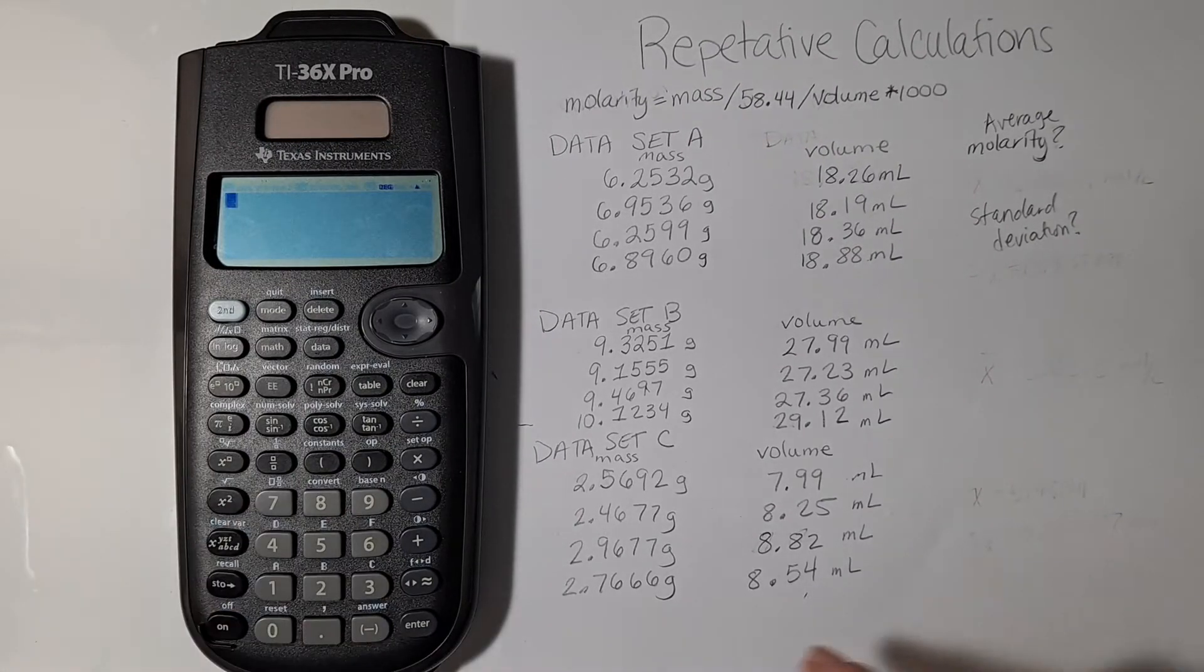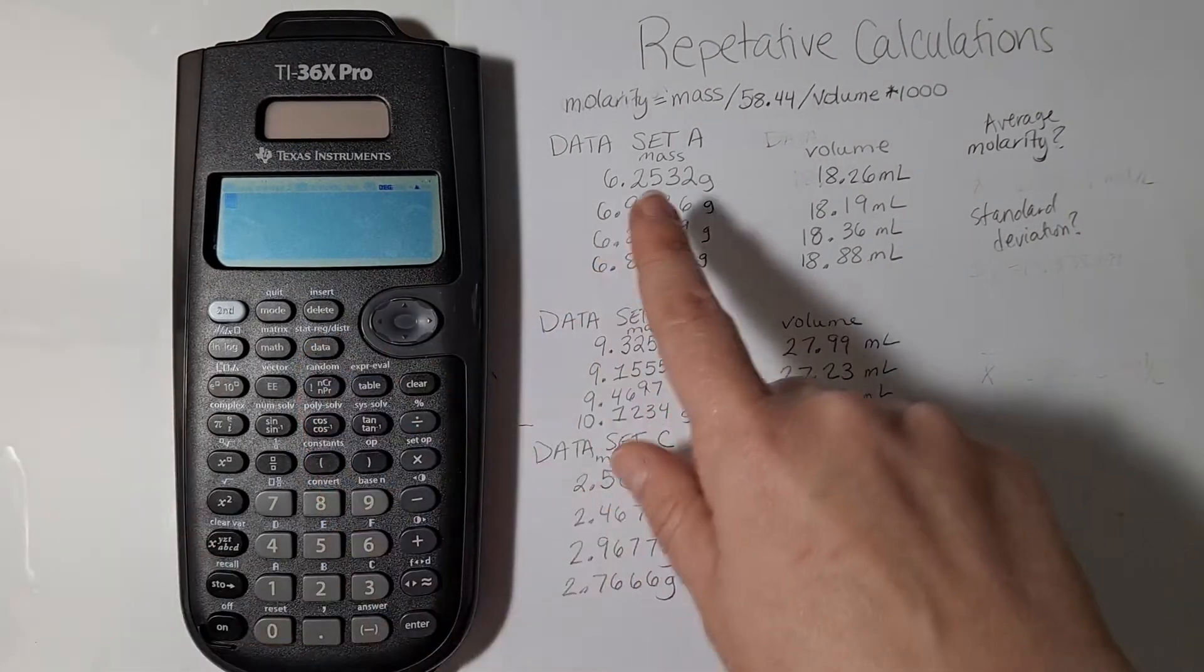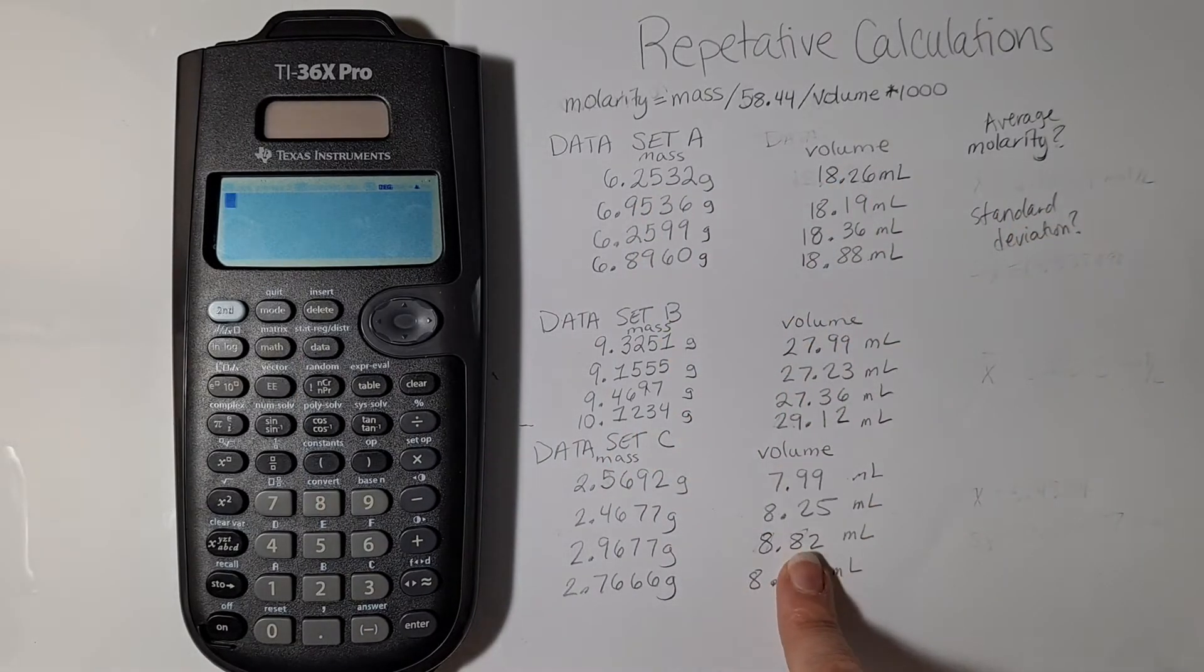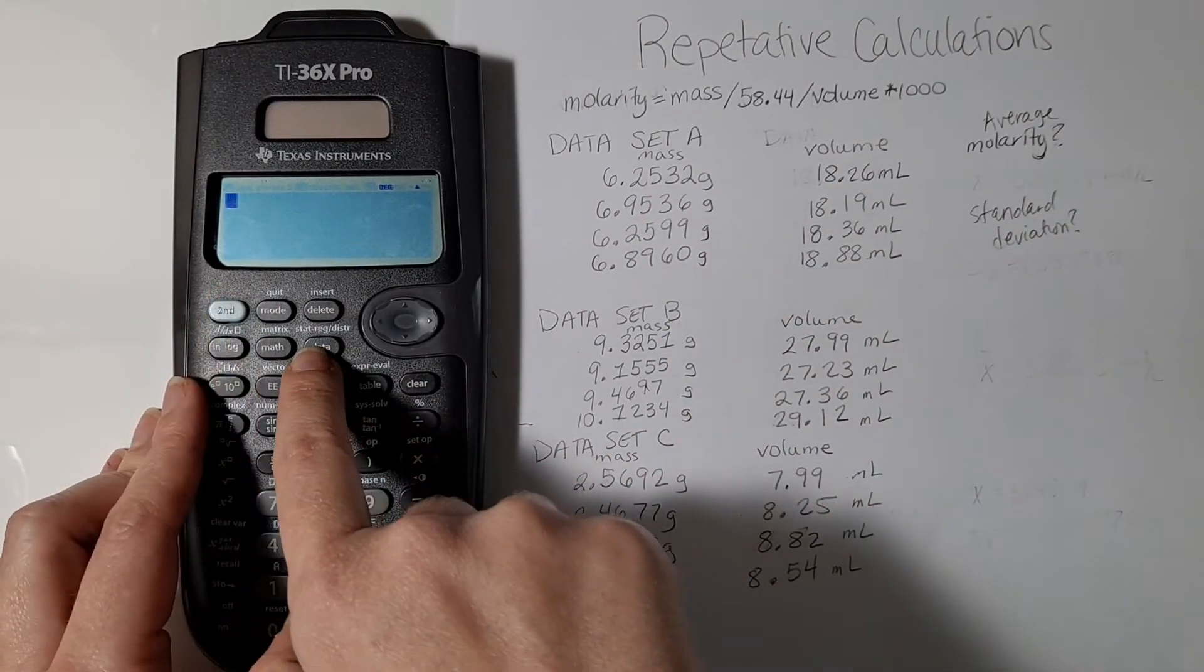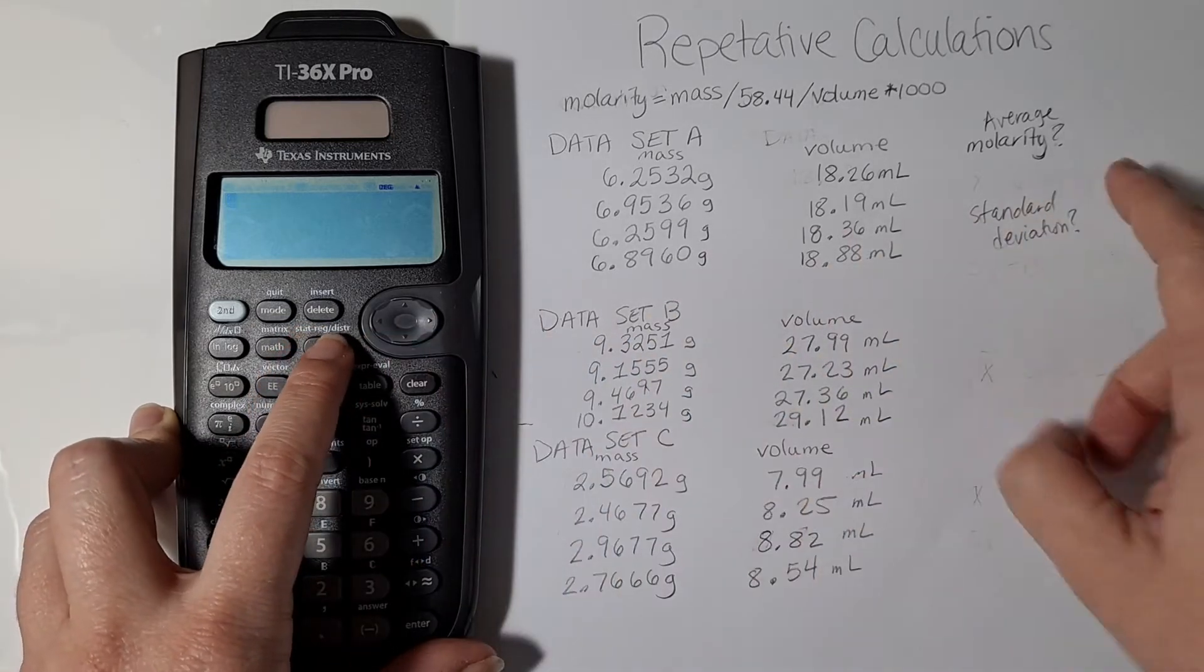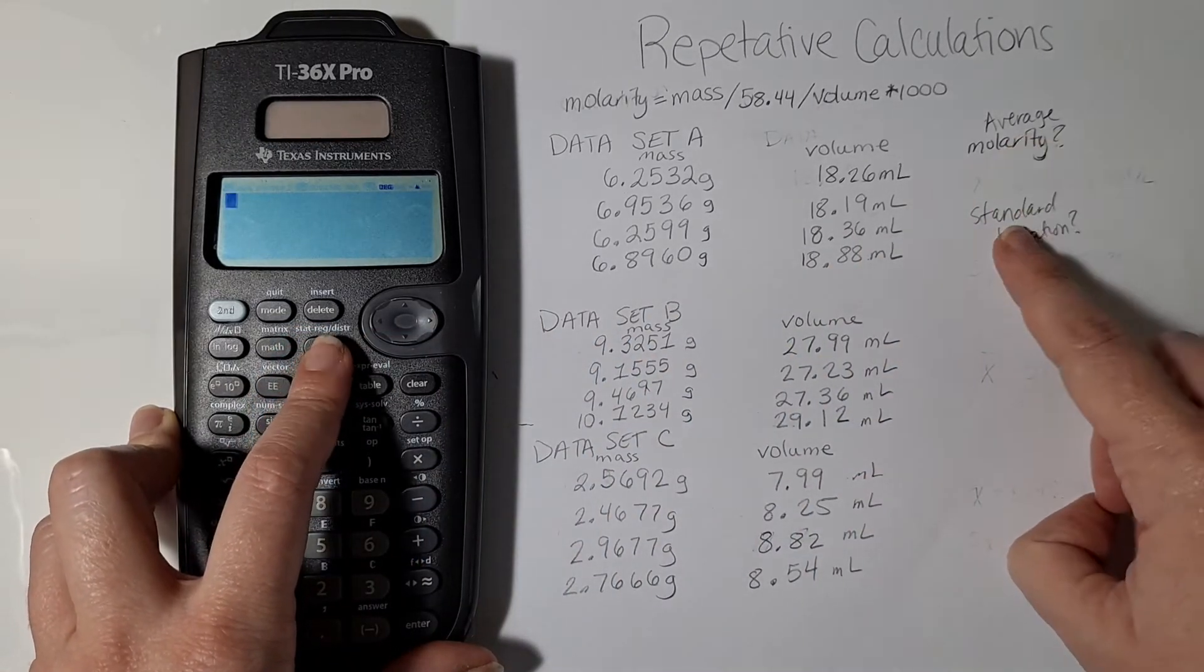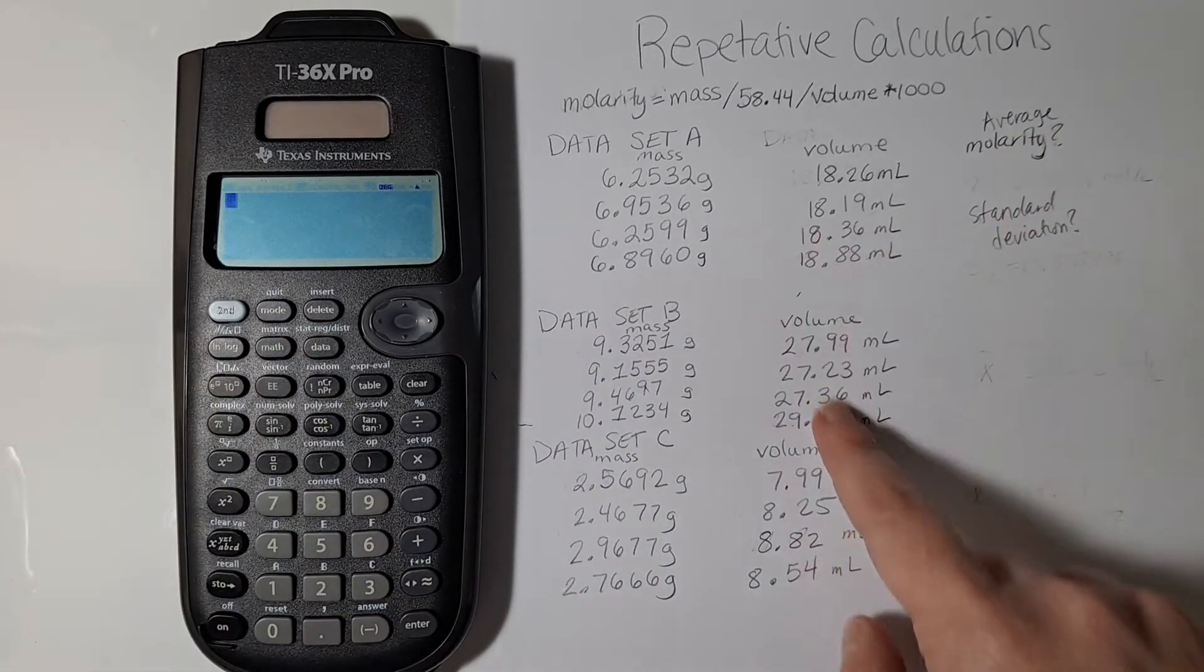In this video we are going to be learning how to use our data tab to do a bunch of repetitive calculations and how to use the stat reg menu in order to get our averages and standard deviations for each of our data sets.